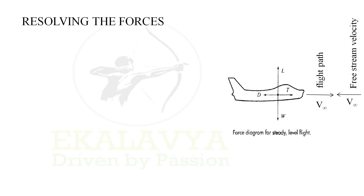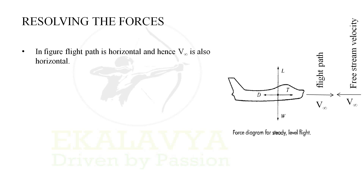V-infinity is the free stream velocity — the velocity with which air passes over the aircraft when it is moving through the atmosphere. Considering the aircraft to be in motion and the surrounding atmosphere to be stagnant, the flight velocity will be equal to the velocity with which air flows over it. In the figure, the flight path is horizontal and hence V-infinity is also horizontal.